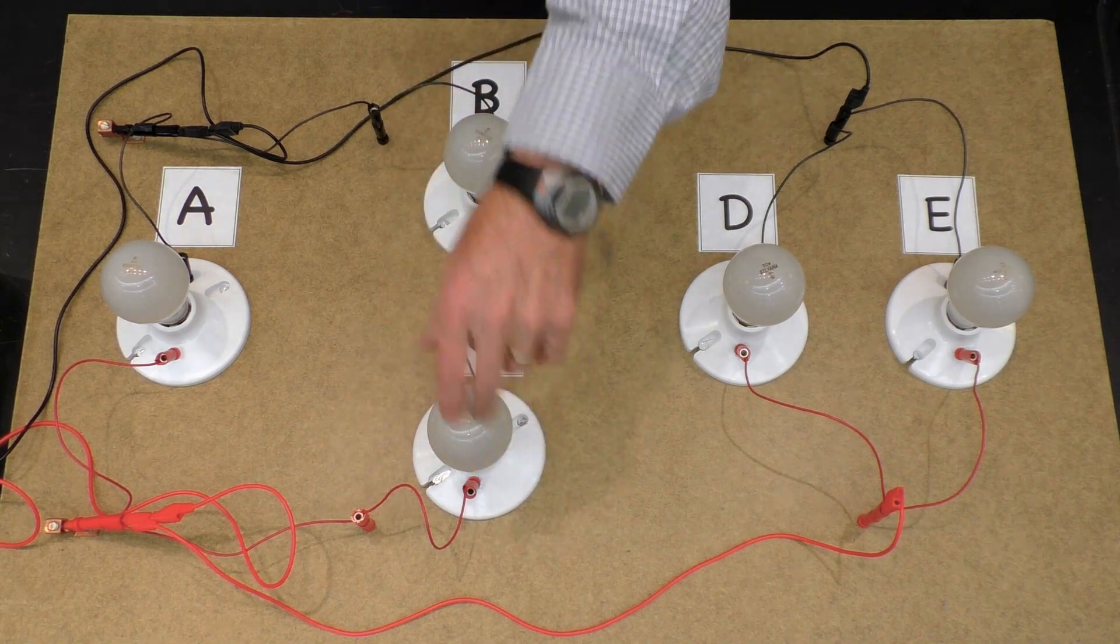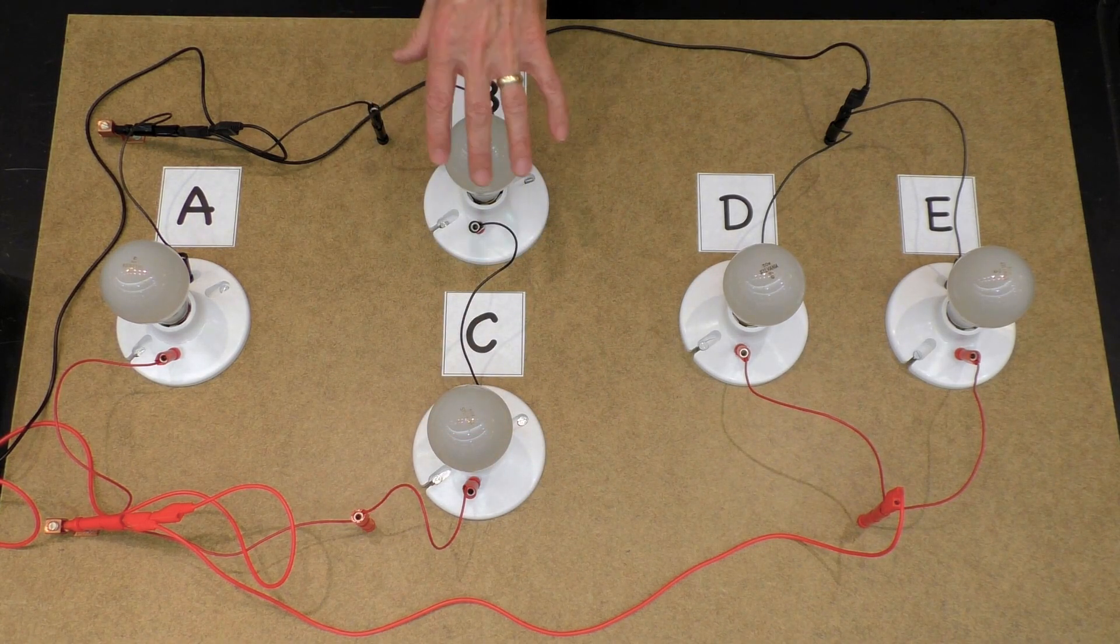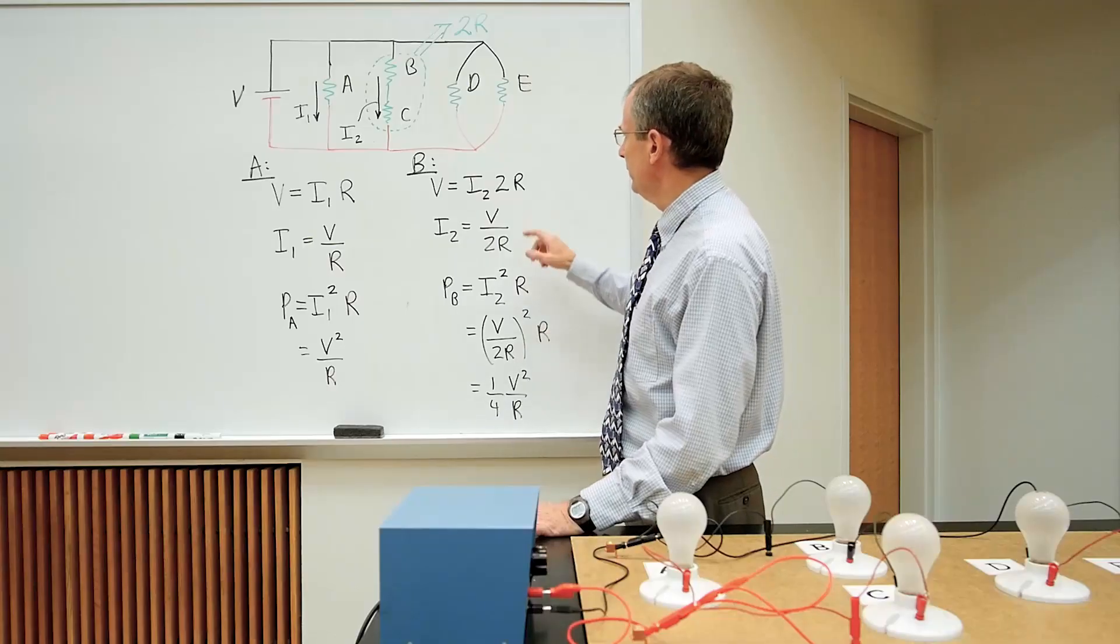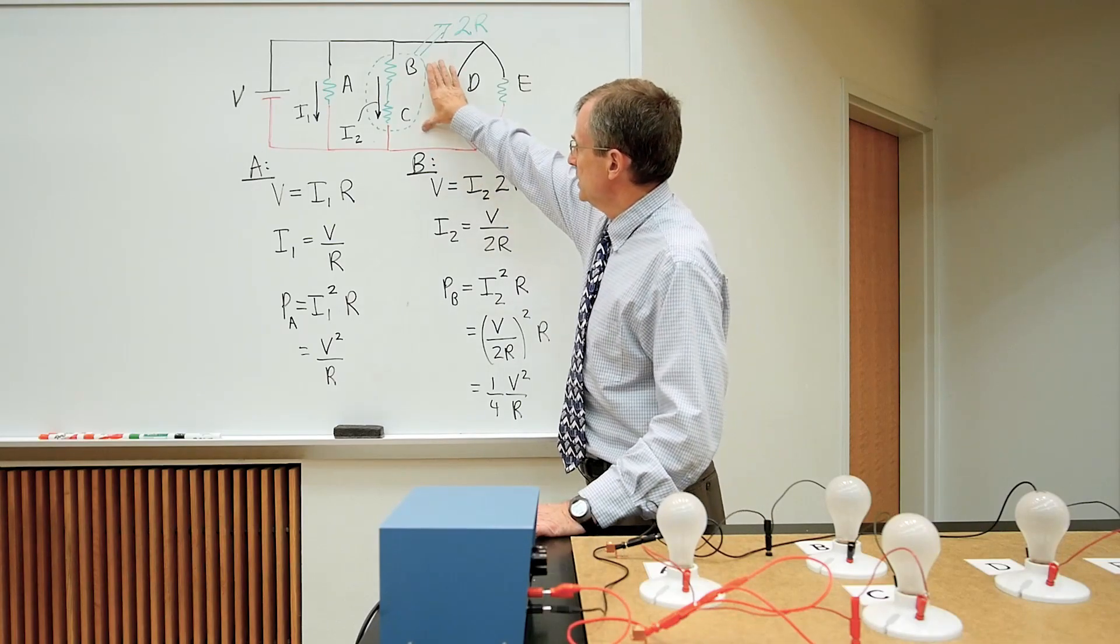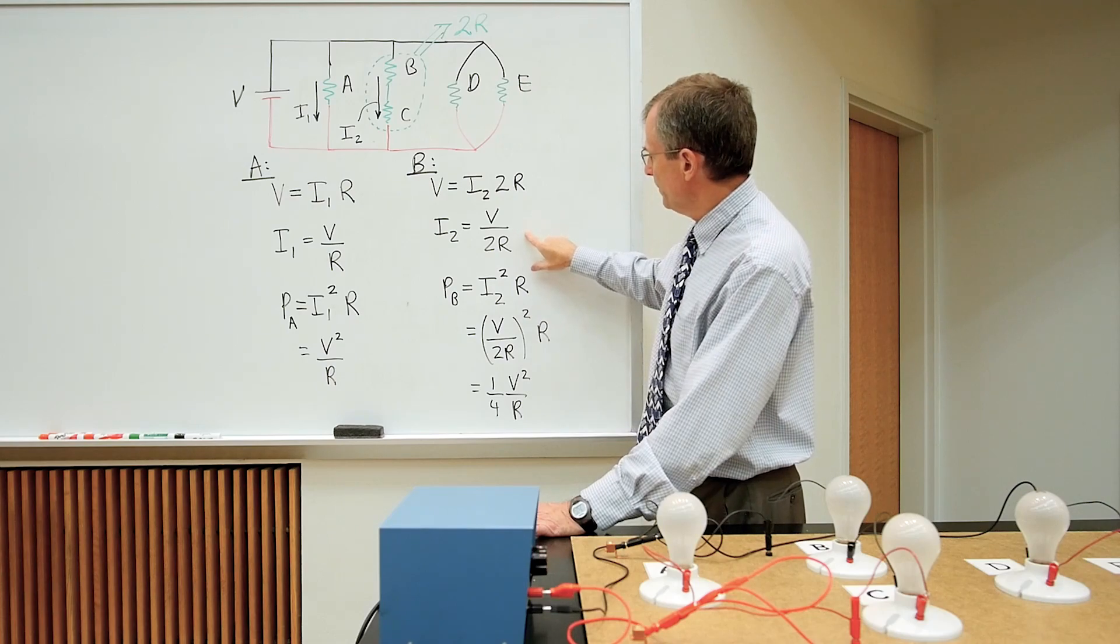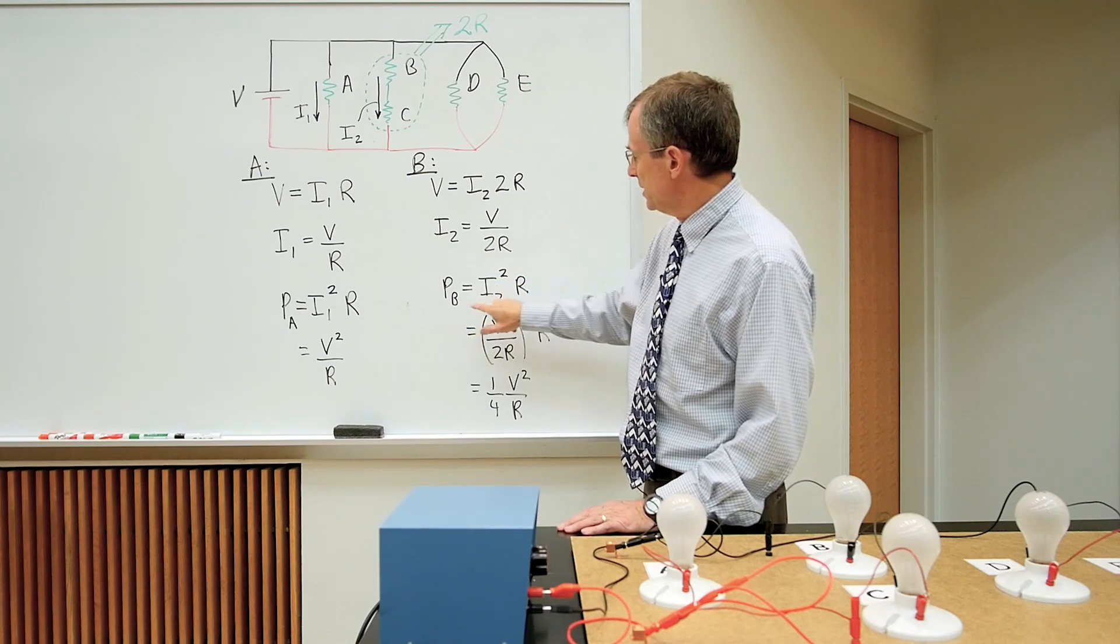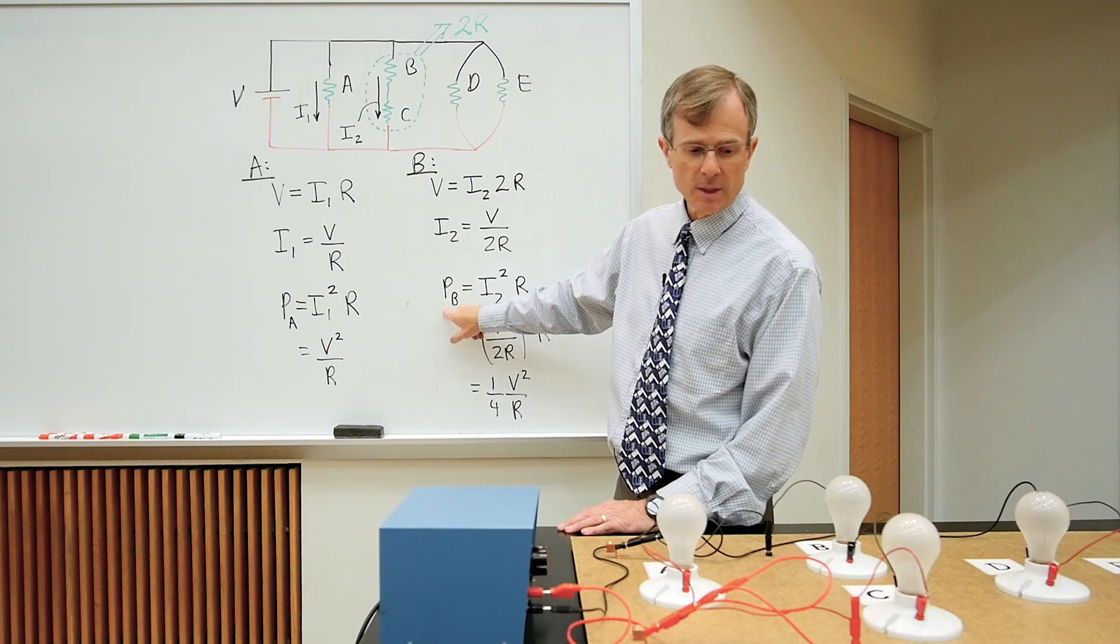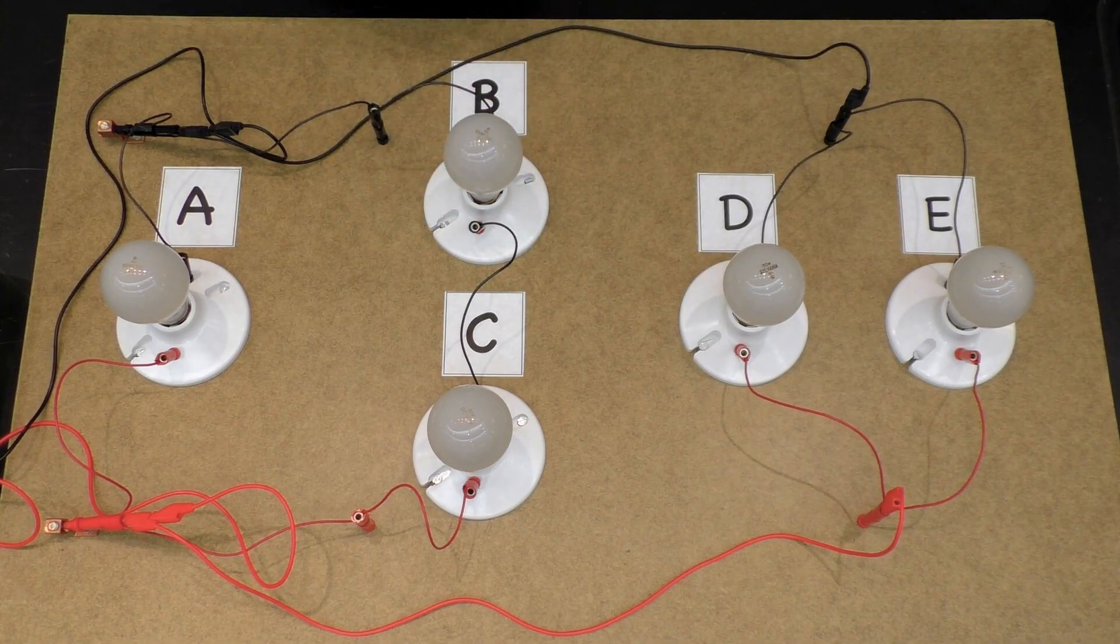They're both the same, so we get twice the resistance of either one of them as the equivalent resistance for this piece. Solving for I2, substituting it into this equation that gives the power dissipated through bulb B.